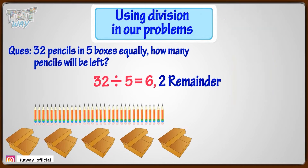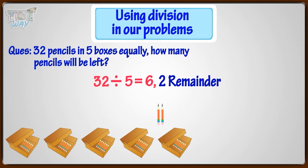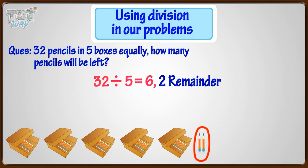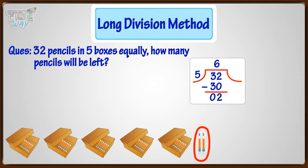That is, dividing 32 pencils into 5 boxes: each box will contain 6 pencils, and remainder 2 means 2 pencils will be left. You can also use the long division method.